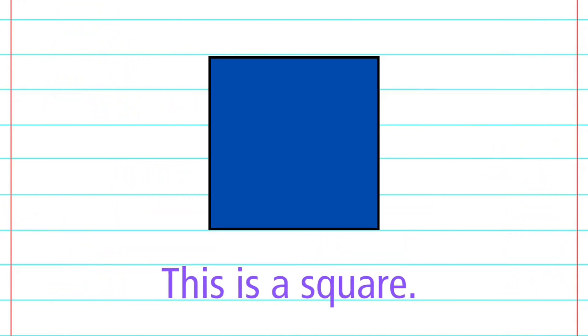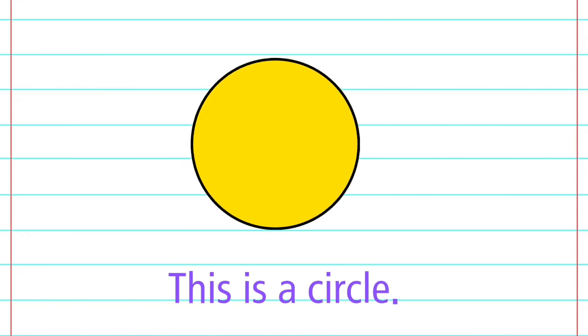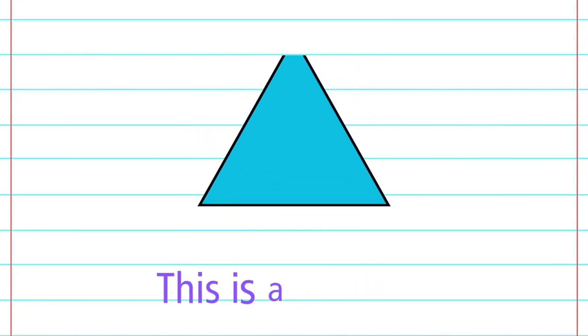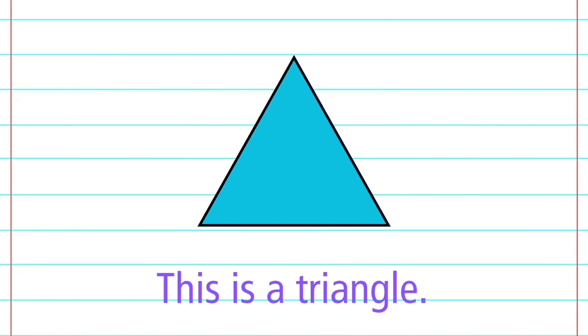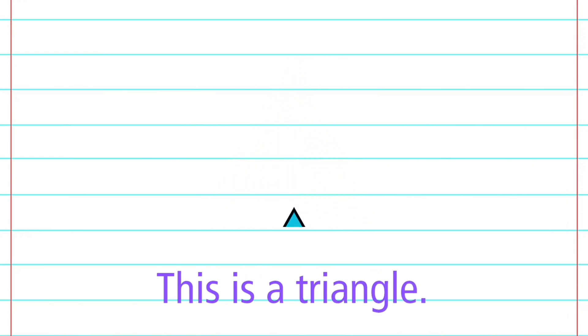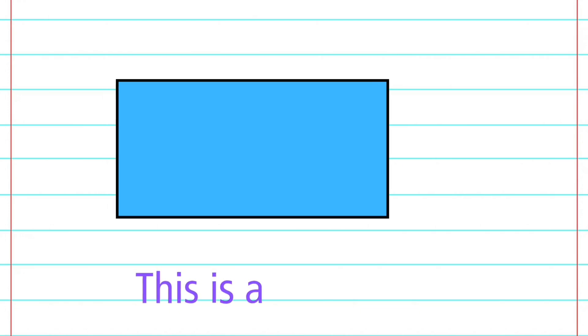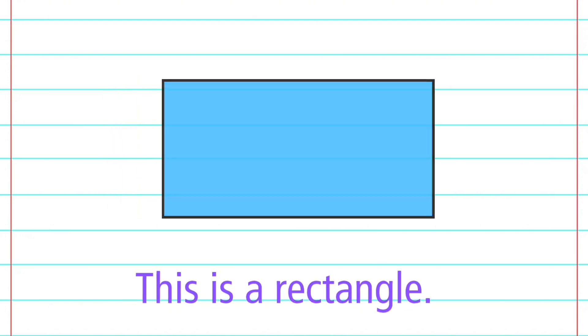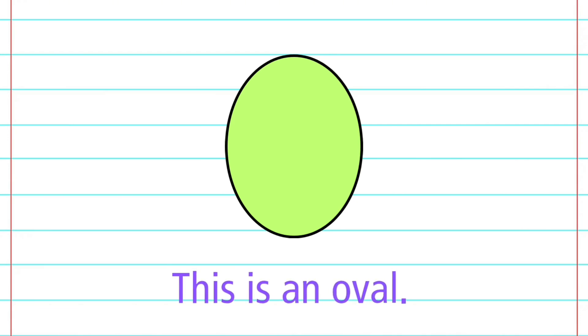This is the square. This is the circle. This is the triangle. This is the rectangle. This is an oval.